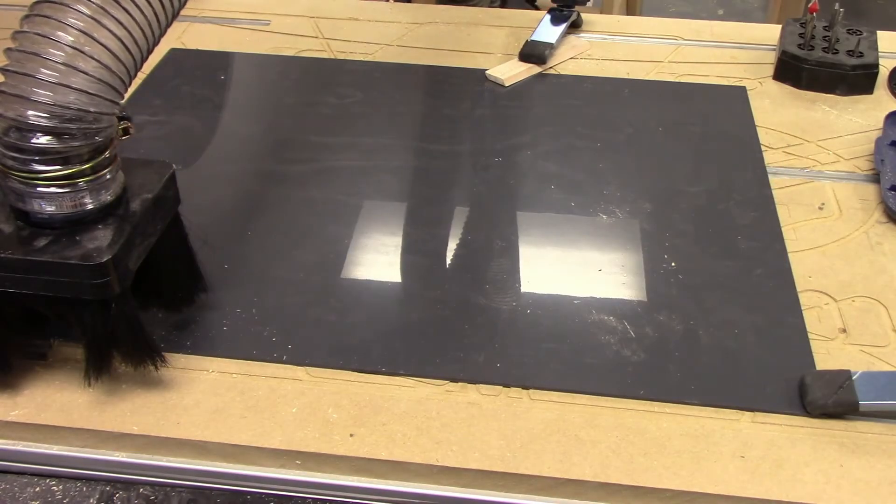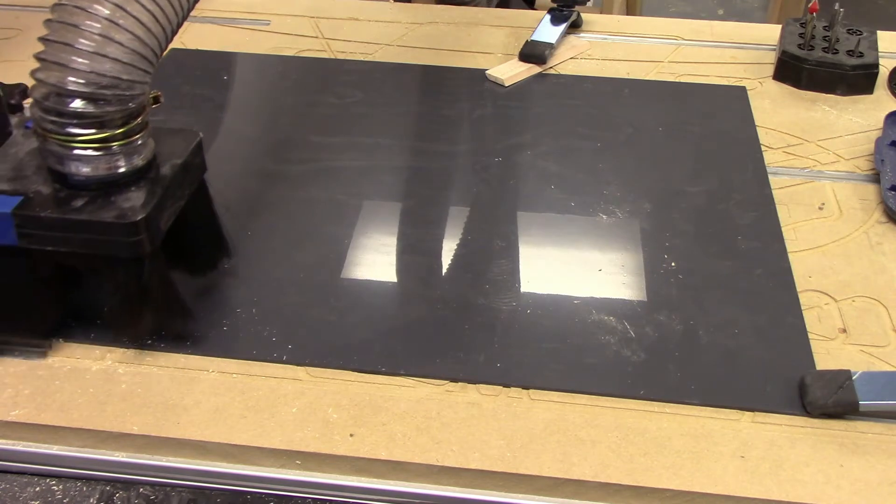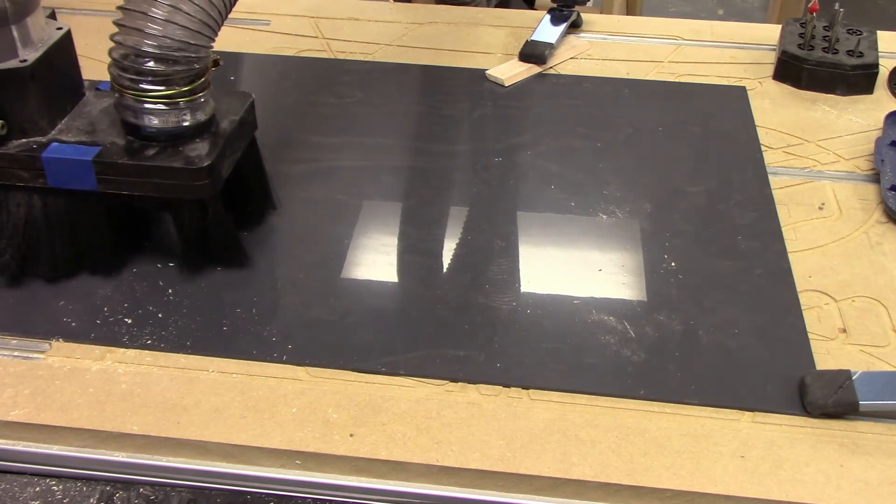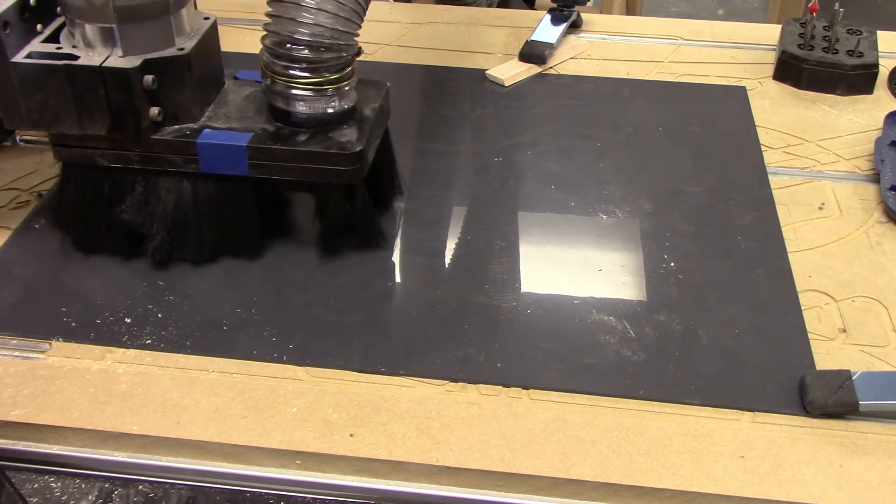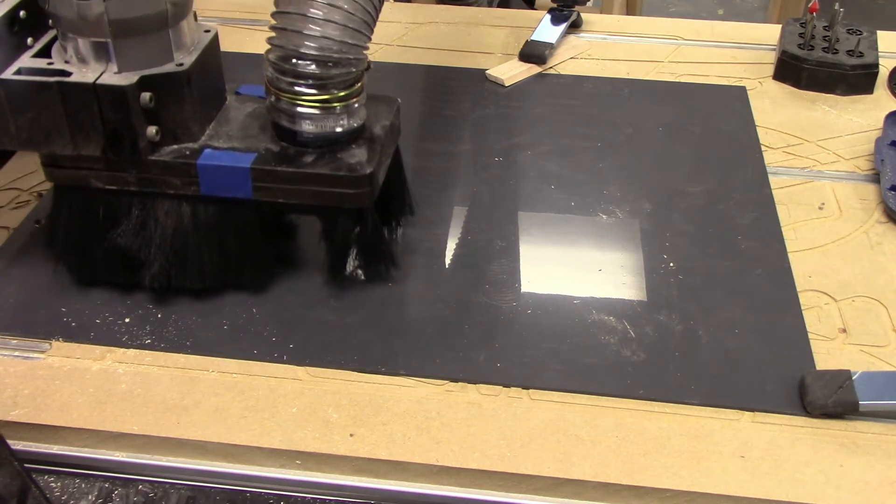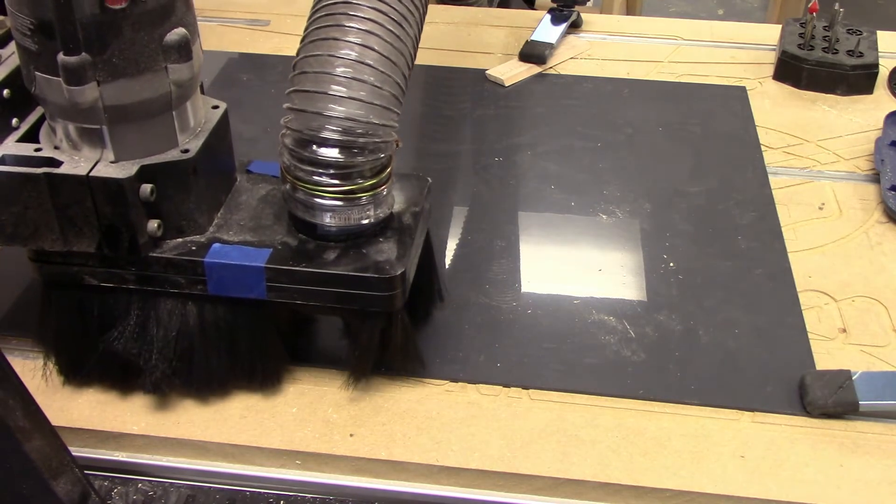The first toolpath is a drill pattern drilling holes in the waste areas of the sheet. I used bugle head wood screws to screw the sheet down to a sacrificial MDF board on the bed of the CNC machine.